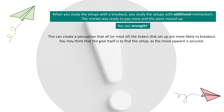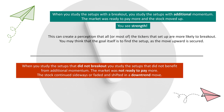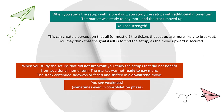You may think the goal itself is to find the setup as the move upwards is secured. Well, when I did the deep dive to look for setups that did not break out, this is what happens: when you study setups that did not break out, you study setups that did not benefit from additional momentum. The market was not ready to pay more. The stock continued sideways or faded into a downtrend. Looking at historical charts, you see the setup and the downtrend move again and again — you see weakness, sometimes even in the consolidation phase. This understanding that the setup could show strength and weakness, even in consolidation, came together after doing both the breakouts and breakdown deep dive, and to me is a very important element on how to better trade the breakout setup.